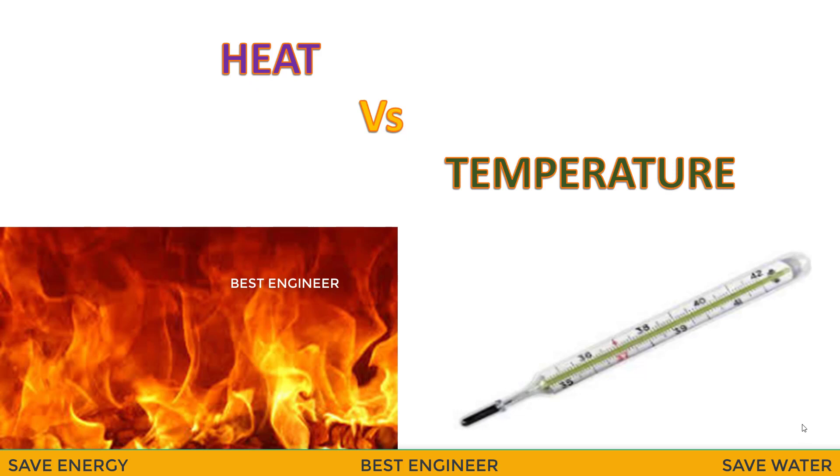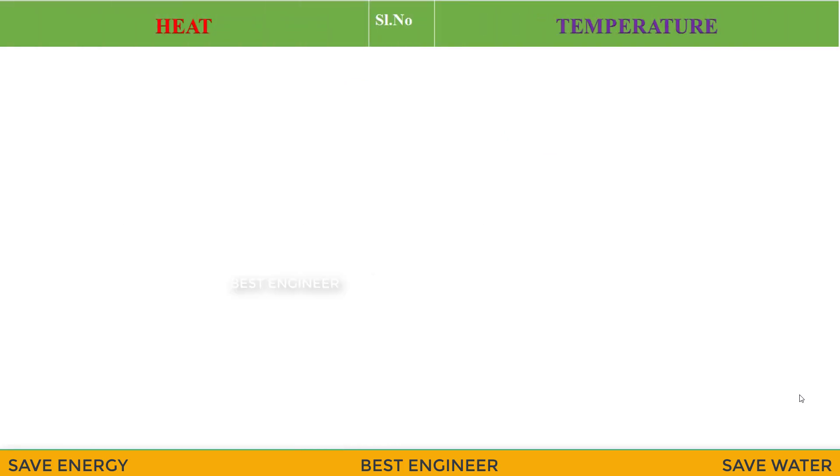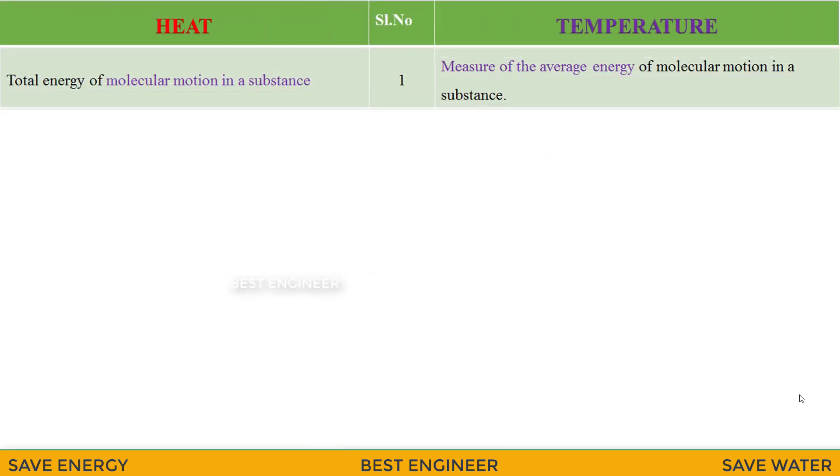Let me explain the difference between heat and temperature. Heat is the total energy of molecular motion in a substance, and temperature is the measure of average energy of molecular motion in a substance.